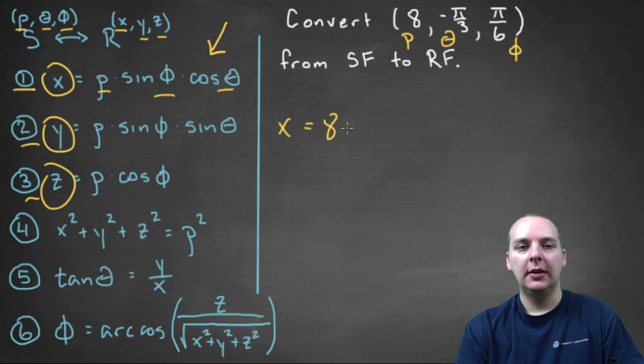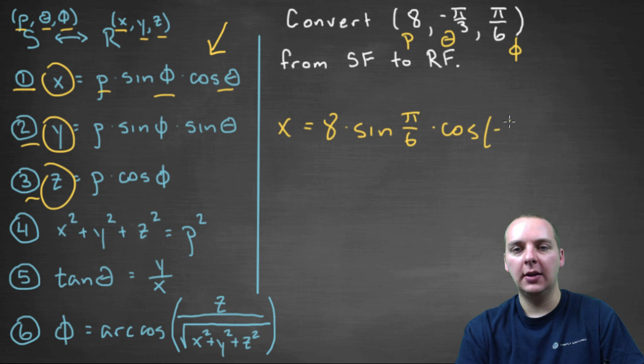times the sine of phi, which in our case is π/6, times the cosine of theta. So cosine of -π/3, like so.